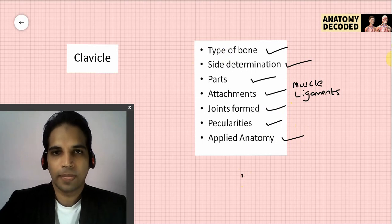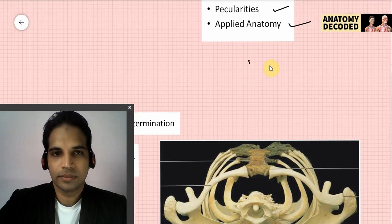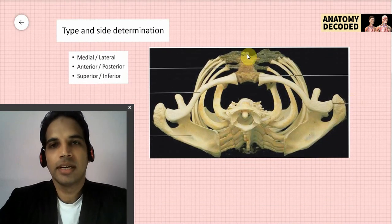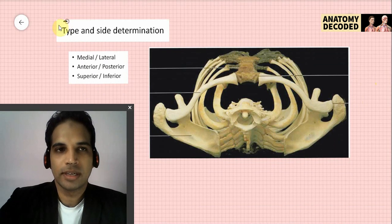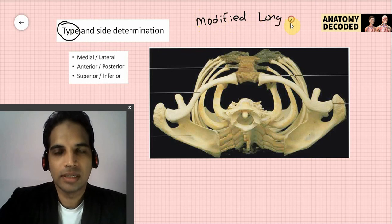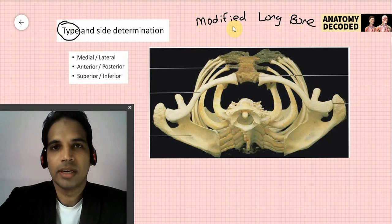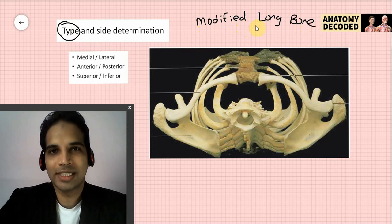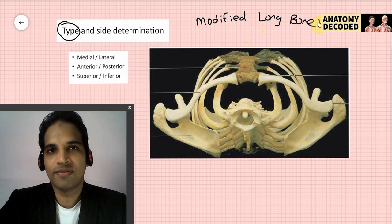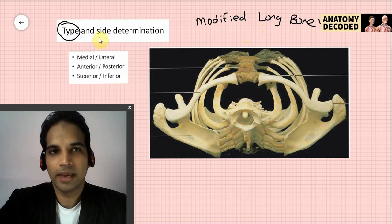Let's begin with the type of bone and side determination. Clavicle is which type of bone? It is an example of a modified long bone. It is called a modified long bone because it has certain characteristic features which are different from that of a typical long bone — we'll see what those features are later on.